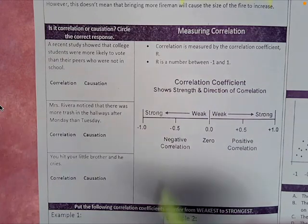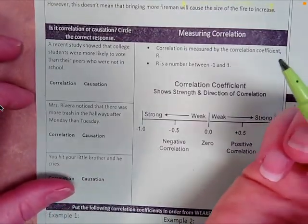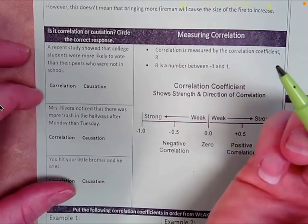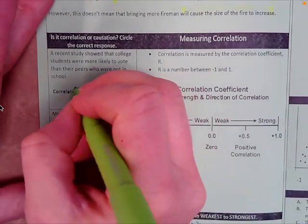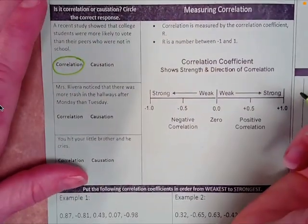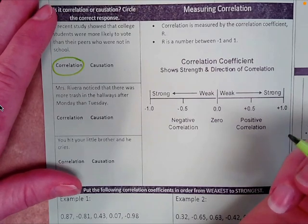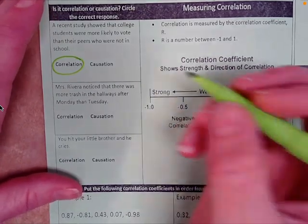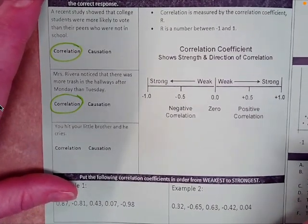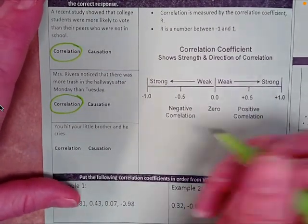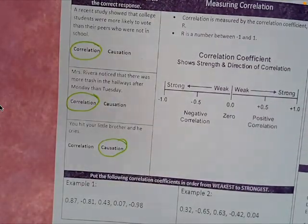Let's look at the examples. First: college students were more likely to vote than peers not in school — that's correlation, one doesn't cause the other. Next: more trash in the hallways after Monday than Tuesday — also correlation. Last: you hit your little brother and he cries — that's definitely causation. You caused him to cry.